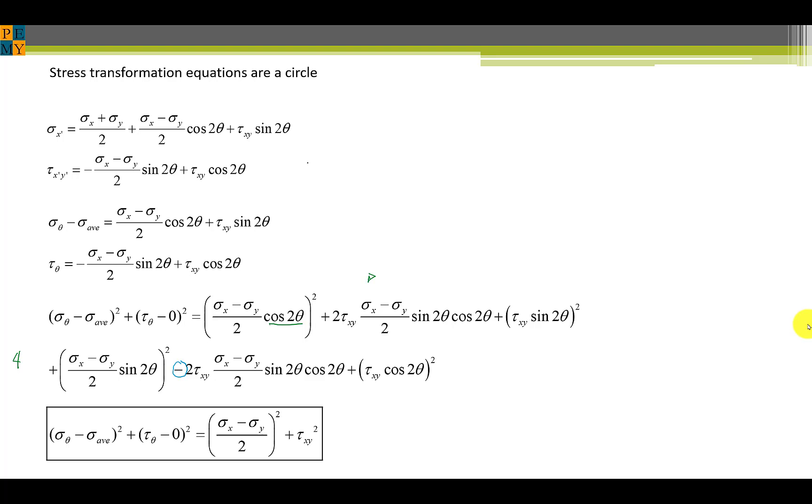What we'll show here is that the stress transformation equations are a circle. We start with these two stress transformation equations that we derived earlier, but we'll simplify things by taking sigma average equal to sigma X plus sigma Y over 2. And we will call sigma X-prime the normal stress in the rotated axis, just call that sigma X. Similarly for tau X-prime Y-prime, the shear stress in the rotated coordinate system, we'll define that as tau theta.